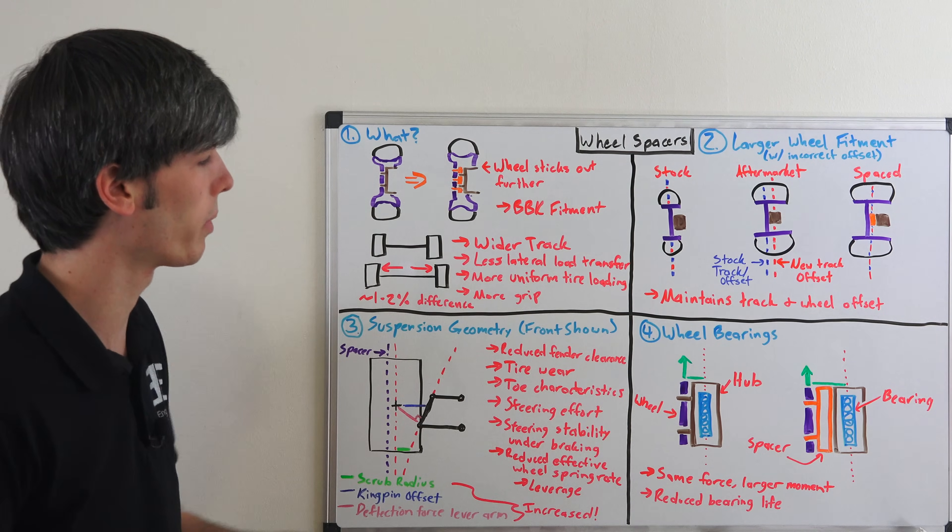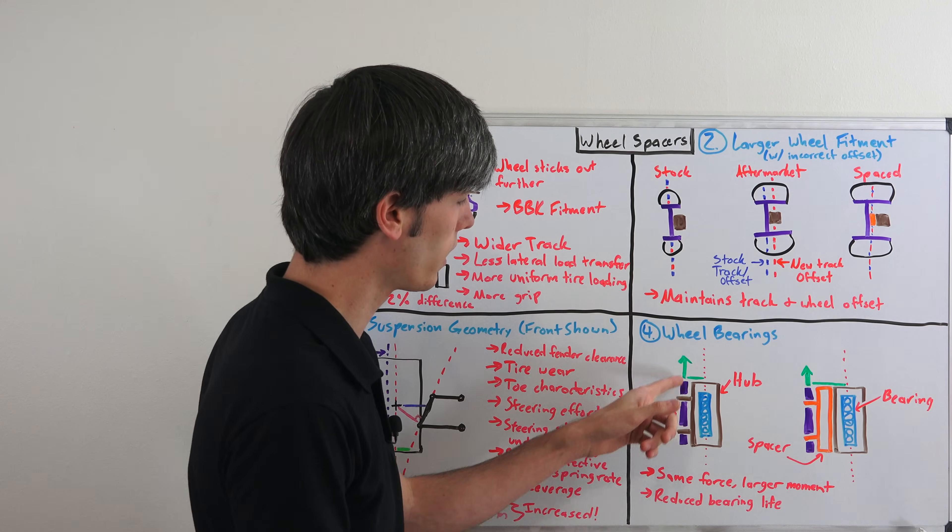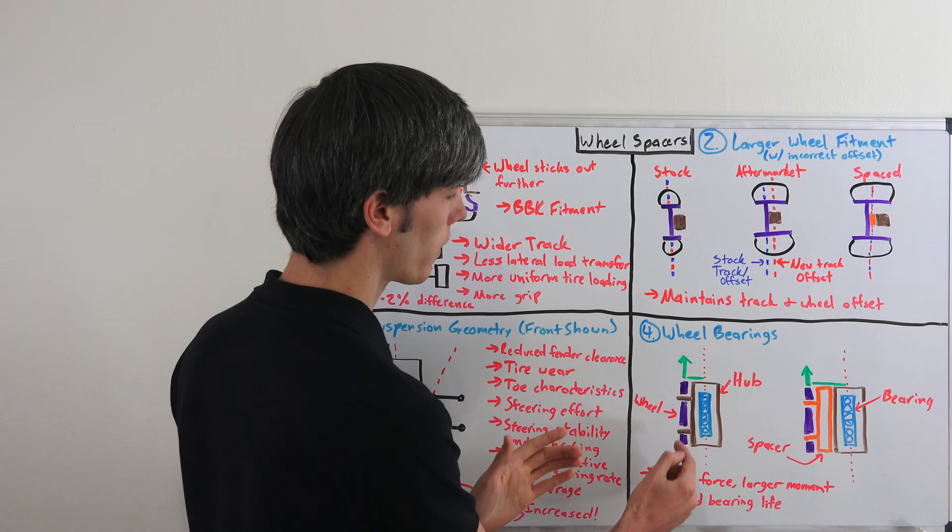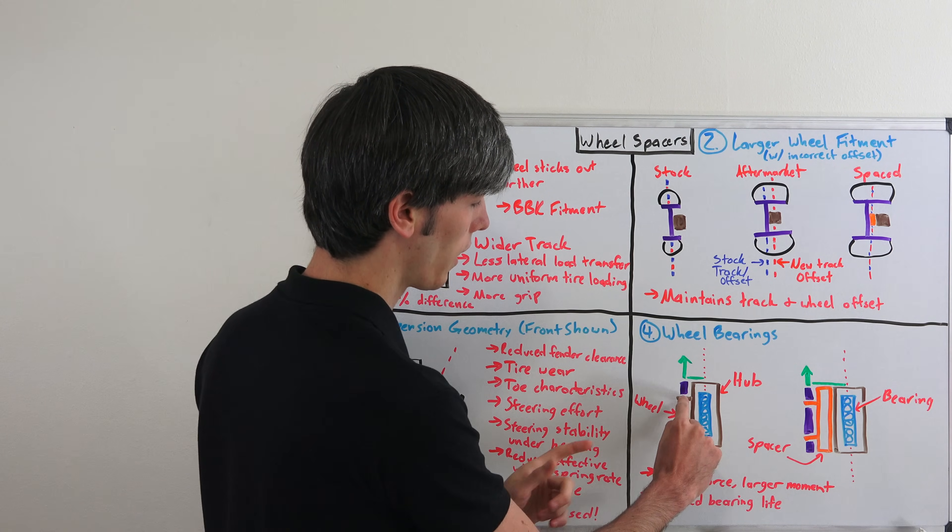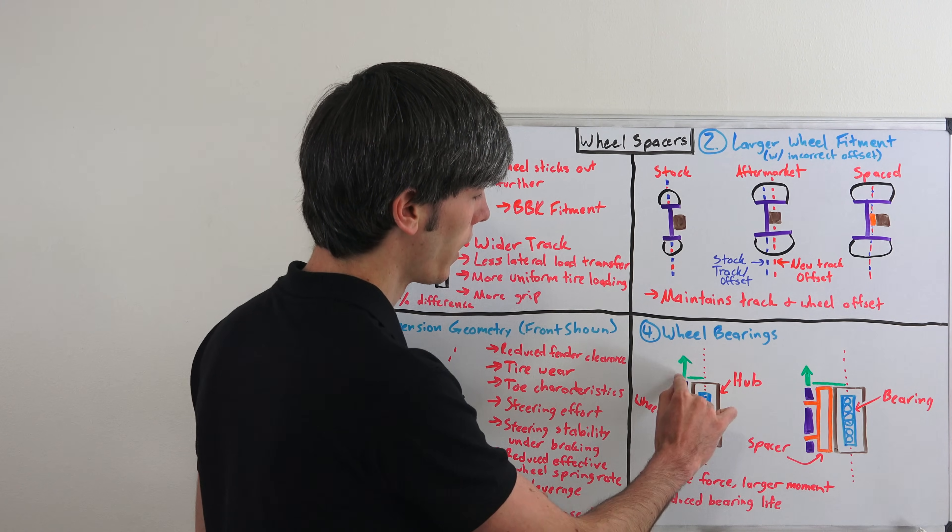So here we have our hub. Inside is a wheel bearing of course. And then here in purple is where our wheel is. So that wheel is holding up the weight of the car. That passes over through these studs of course to the hub. So you've got a force here and a distance. And that's going to be creating a moment.